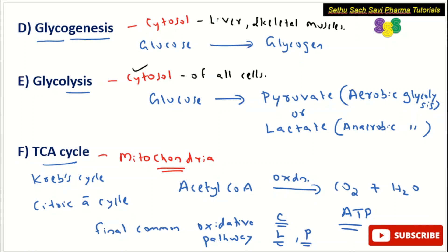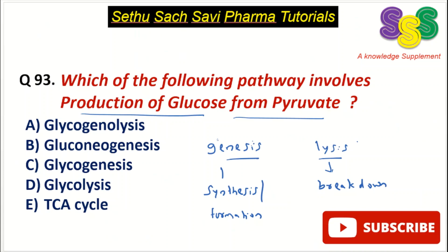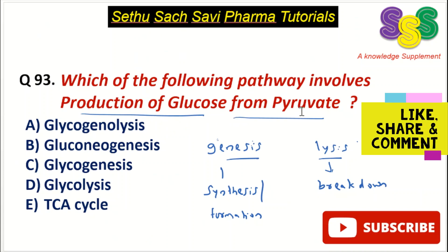Coming back to the question: which pathway involves the production of glucose from pyruvate? Pyruvate is a non-carbohydrate compound, and the conversion of a non-carbohydrate compound to glucose is gluconeogenesis. Therefore, the correct answer is definitely Choice B, gluconeogenesis. Thank you.